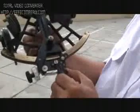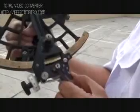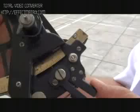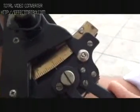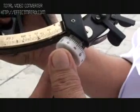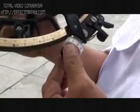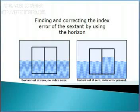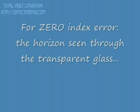Set the sextant arm and micrometer drum to read 0 degrees and 0 minutes. Aim the sextant at the horizon where you can also see the reflected horizon at the right side of the horizon glass.